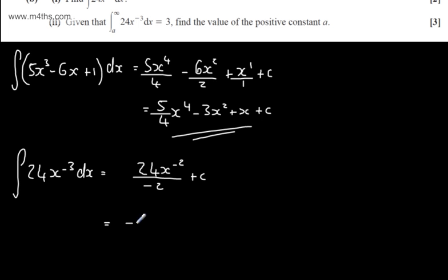If we tidy this up, we can see that this could be written as minus 12, x to the minus 2 plus c, or we could write this as minus 12 over x squared plus c. You'll get the marks for either one of these answers.